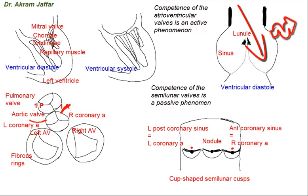During ventricular contraction, the cusps are open and pushed against the sinuses, and the openings of the coronary vessels are closed; therefore, perfusion of the ventricle does not take place during ventricular systole. This is the only place in the body where perfusion occurs during relaxation rather than contraction. To summarize: competence of the atrioventricular valves is an active phenomenon requiring papillary muscle contraction and chordae tendineae tightening to prevent cusp prolapse, while competence of the semilunar valves is passive, produced by blood closing the cusps and preventing regurgitation.